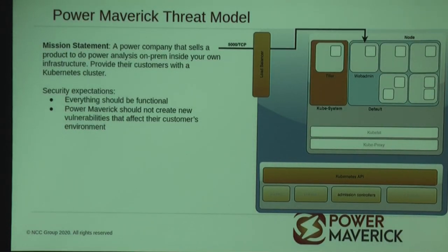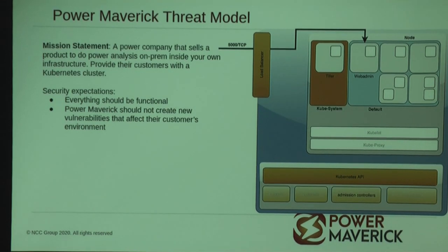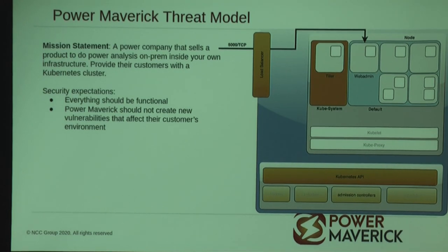The first company is Power Maverick. They're running a service on port 5000 exposed to something called Web Admin. Power Maverick sells power analytics on-premises for customers — basically selling Kubernetes as a service deployed into your own private cloud, bare metal systems, or data center, doing number crunching on power consumption. Their expectations: everything has to work, and they can't affect the rest of their customers' environments.